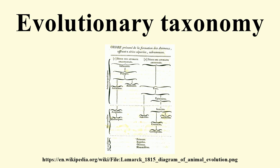The concept found its most well-known form in the modern evolutionary synthesis of the early 1940s. Evolutionary taxonomy differs from strict pre-Darwinian Linnean taxonomy in that it builds evolutionary trees. While in phylogenetic nomenclature each taxon must consist of a single ancestral node and all its descendants, evolutionary taxonomy allows for groups to be excluded from their parent taxa, thus permitting paraphyletic taxa.